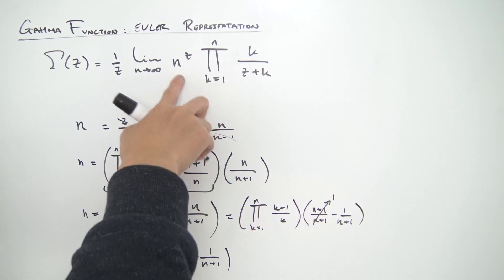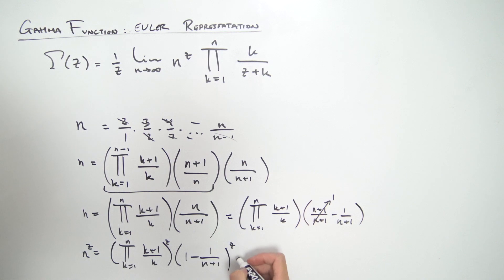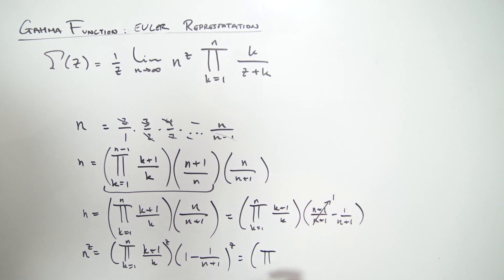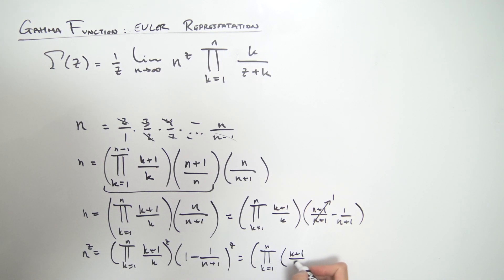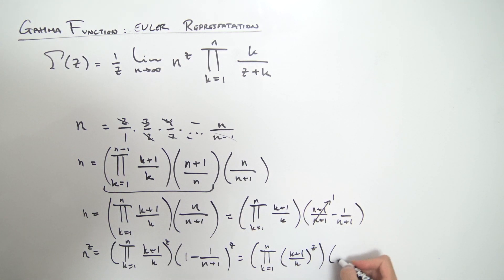We should raise everything to the z power. So n^z equals this product raised to z as well as the other factor raised to z. When you have a product raised to z, you get the product of each term inside raised to the z power. So we have the product from k=1 to n of ((k+1)/k)^z, times (1 − 1/(n+1))^z.